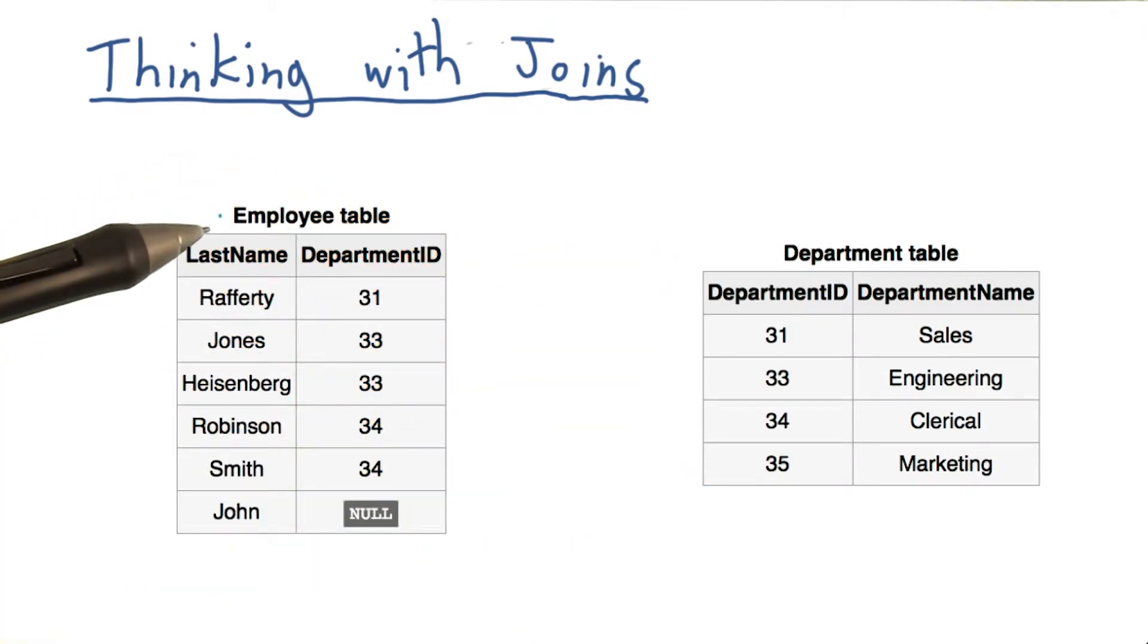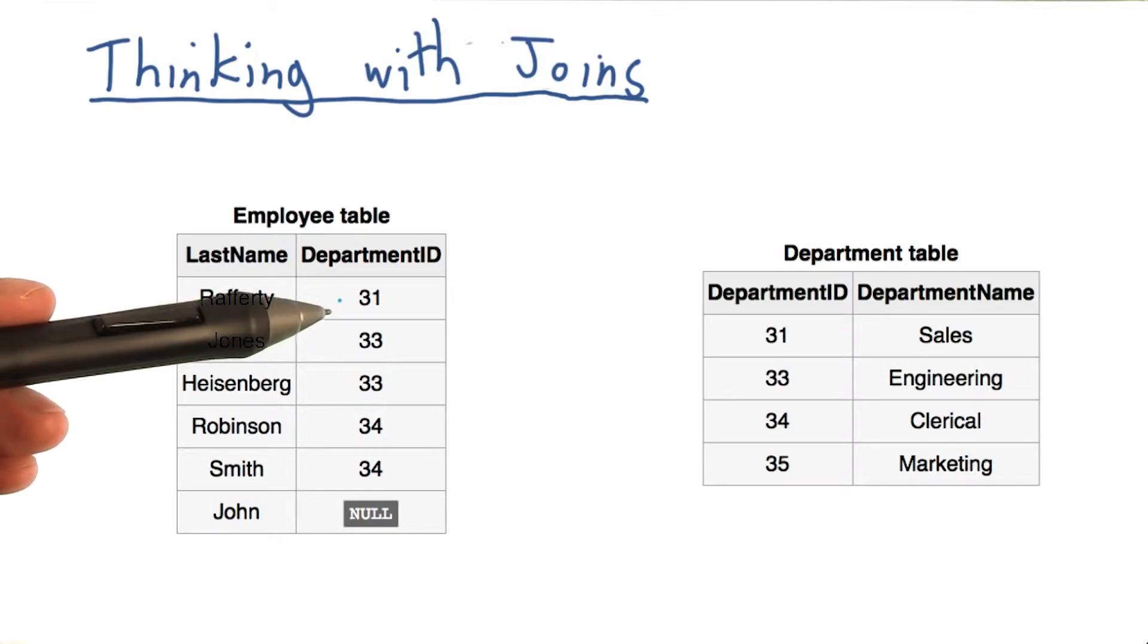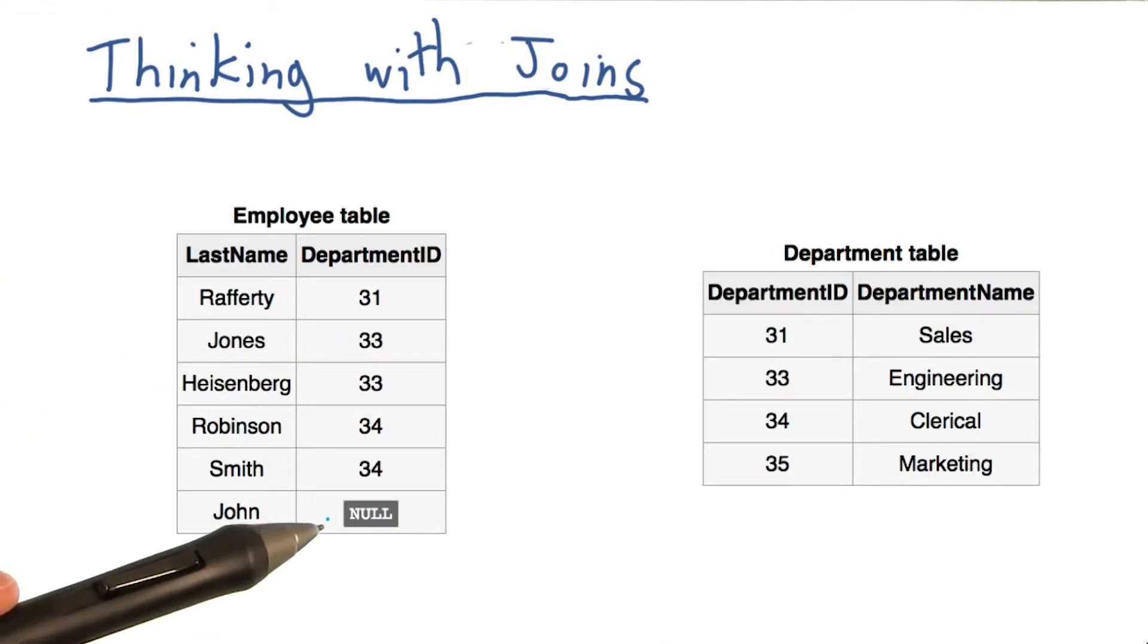In the first table, the employee table, each row represents an employee's last name and the department ID which they are employed in. So in the case of the first row, employee Rafferty works in department 31, Jones works in department 33, and so forth. One thing to note is the value null here, which represents an empty value. So let's just say that John doesn't work for any specific department.